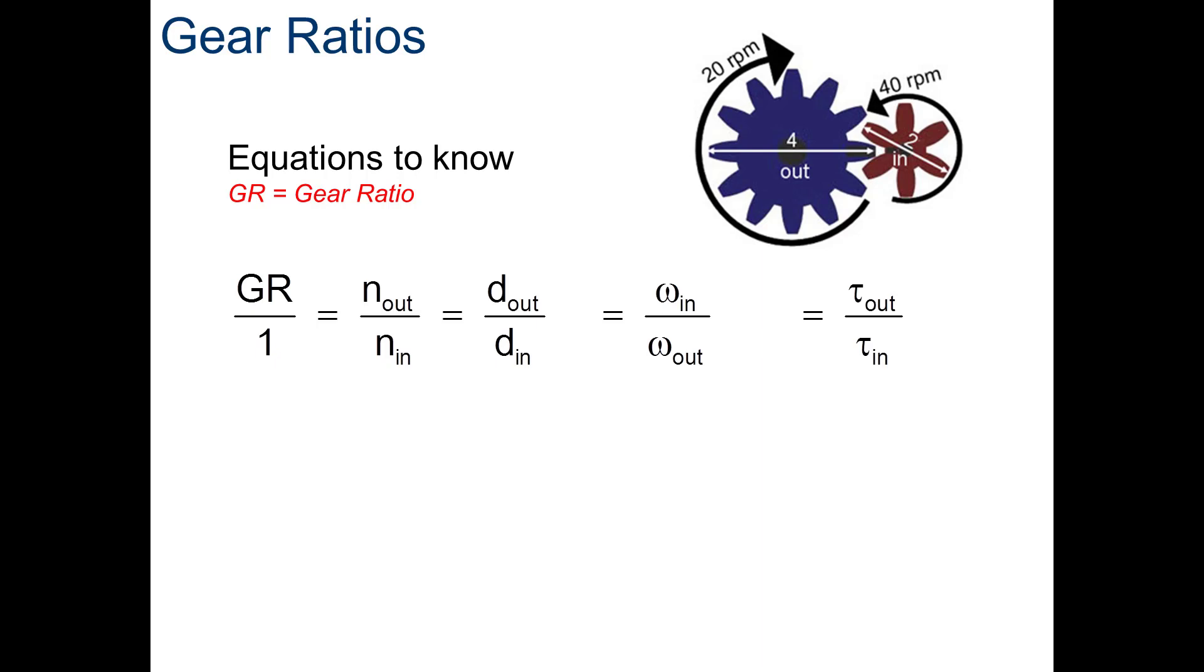And we can use any of these formulas in conjunction with one another as an equality to solve for an item. For example, if we know the number of teeth out, and we know the angular velocity in and out, we can calculate the number of teeth in. Because we are missing one variable in the formula.